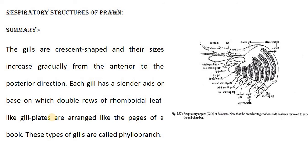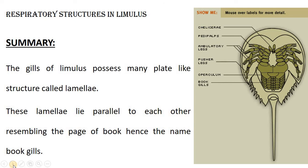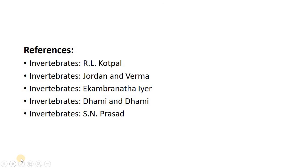Summary: In Limulus, the gills possess many plate-like structures called lamellae. These lamellae lie parallel to each other, resembling the pages of a book, hence named book gills. References include: Invertebrates by Kotpal, Invertebrates by Jordan and Verma, Invertebrates by Ekambarantha, and Invertebrates by Dami and Dami, and Invertebrates by Sundara. Thank you for listening.